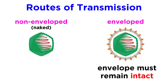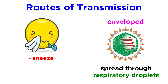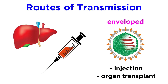Enveloped viruses require an intact envelope to be able to cause an infection. In fact, they have to remain wet to be able to spread to begin with, so they're typically spread through respiratory droplets such as during a sneeze, or through blood, saliva, or mucus. They can also be spread by injection or organ transplants.